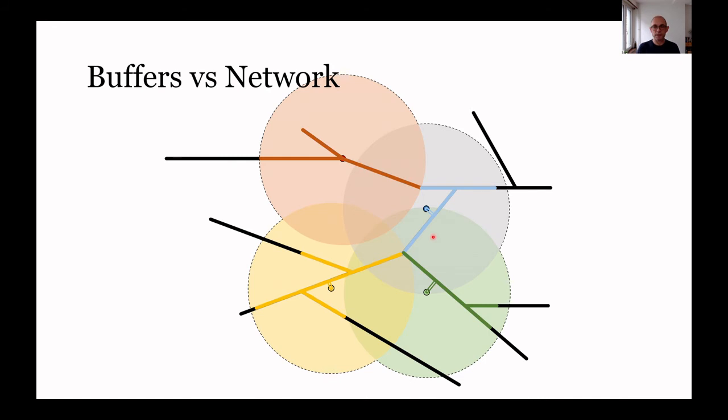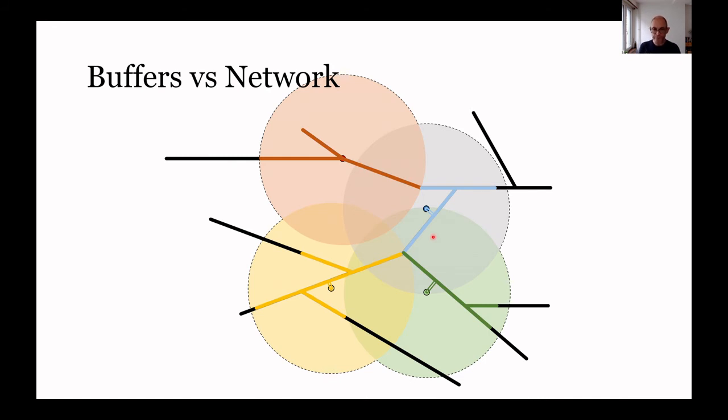Now we start getting into the concept of the service area. The service area is that area not just directly on the network but adjacent to the network that we might be able to access from it. Naively, we could buffer out our roads that we've been able to travel on, that part of the network that is within the allotted distance, our one hour travel time or 100 kroner petrol cost or whatever, and then buffer out some distance. This is a very naive analysis and obviously doesn't look terribly satisfactory.